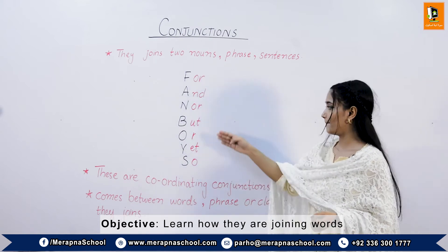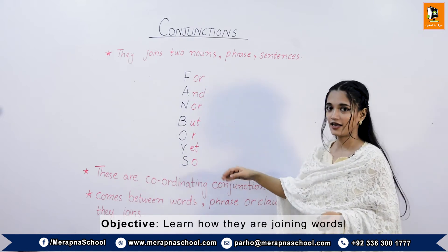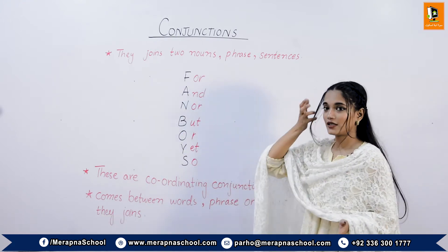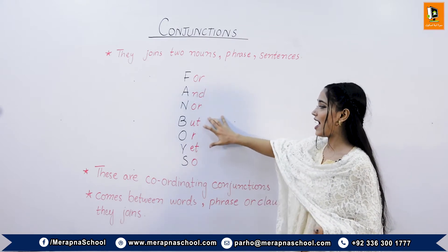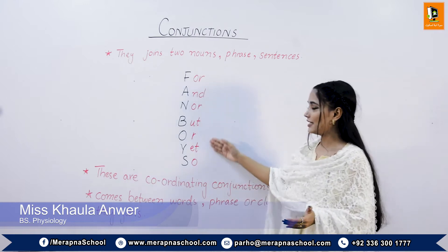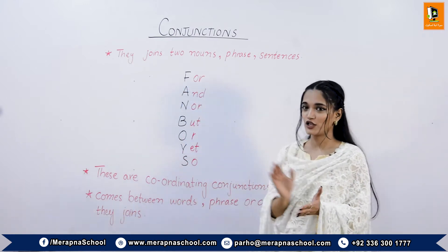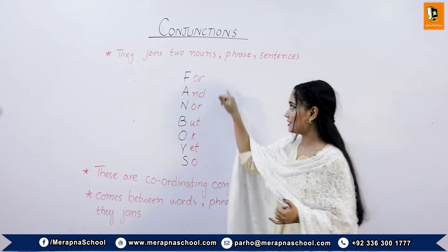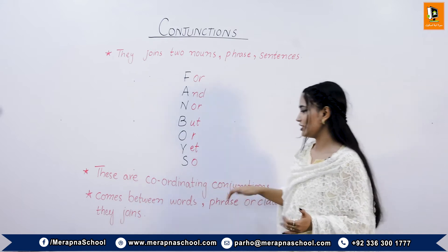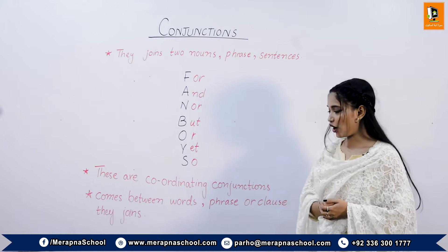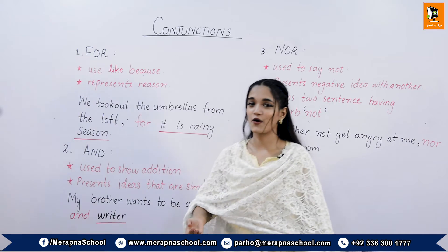The coordinating conjunctions are: for, and, nor, but, or, yet, so. If we look at them, the coordination between them forms the word FANBOYS. To learn all these coordinating conjunctions, you can learn this word FANBOYS. The coordinating conjunctions come between a word, phrase, or clause — they join them.